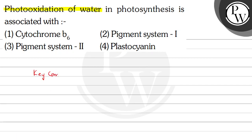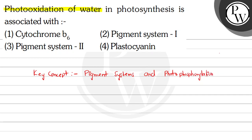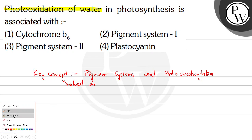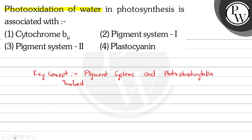The key concept of this question is pigment systems and photo phosphorylation, which are involved in the light reaction of photosynthesis.